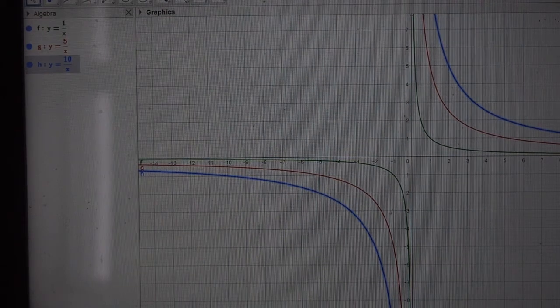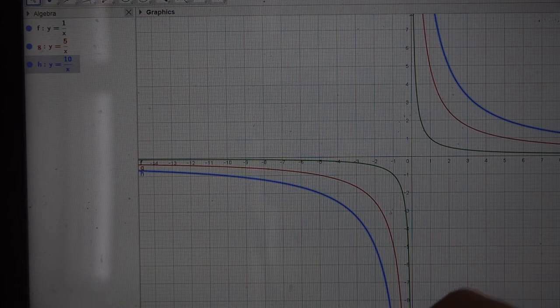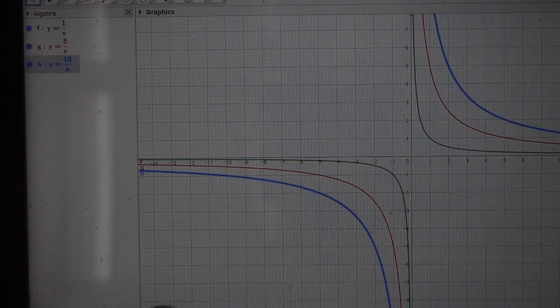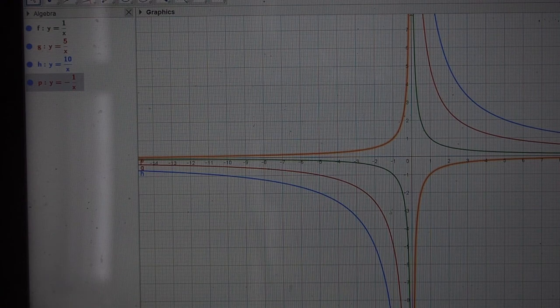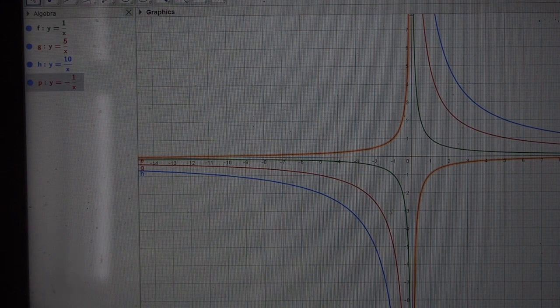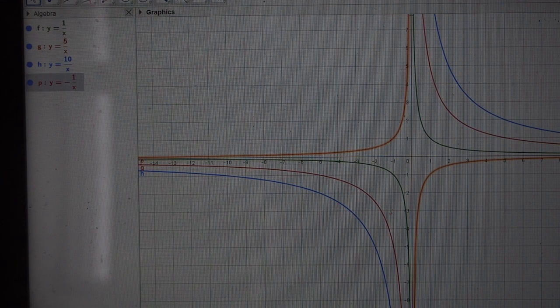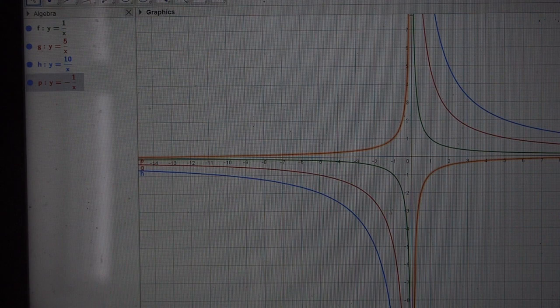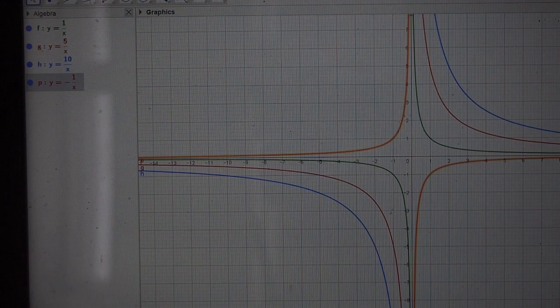Now if we've got negative values of k, our graph is just using the other quadrants. So instead of being in quadrants 1 and 3, it's now in quadrants 2 and 4. Same shape, same graph, just in the opposite quadrants. Hopefully that was helpful for you to visualize what a hyperbola is.